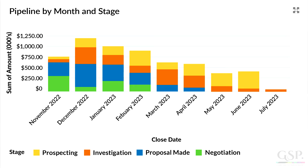For example, we can see that the funnel contains $750,000 of opportunities due to close in November. Of this, $40,000 is at the prospecting stage and another $50,000 at the investigation stage. This type of chart gives powerful visibility of the funnel and the underlying report means you can drill down for more details.